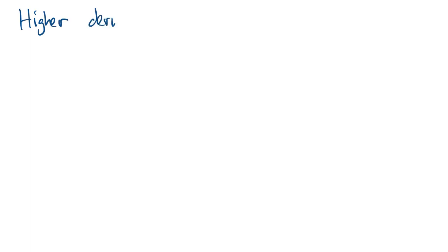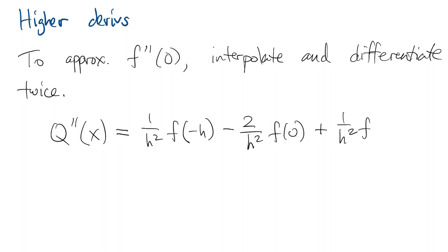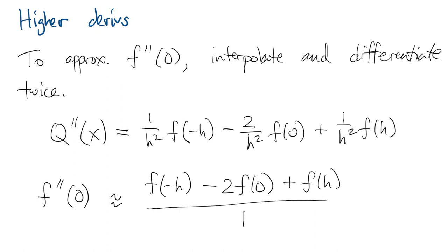We can also estimate derivatives higher than the first derivative. For example, we can use the same interpolant q as before, and compute q double prime at zero to stand in for f double prime at zero. This gives a centered second difference.